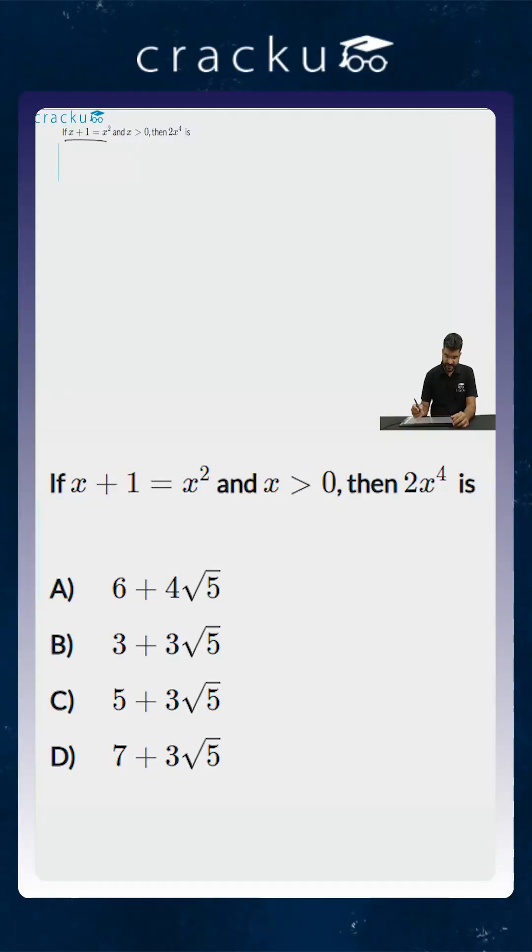This question states that x plus 1 is equal to x squared, and we are required to find out the value of 2x to the power 4. So we are told that x squared is equal to x plus 1, and we need to find the value of 2 into x to the power 4.